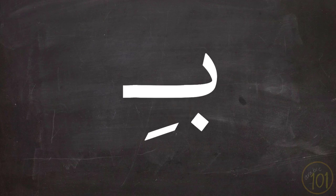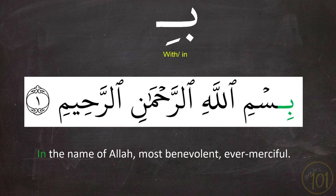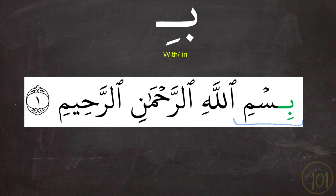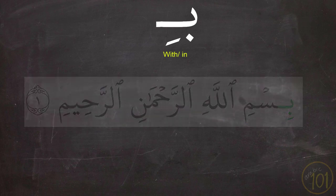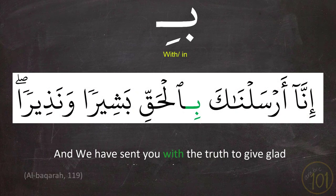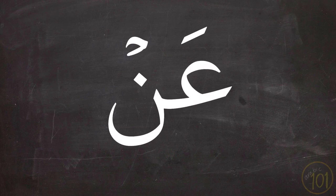The first preposition is بِ and it means 'with' or 'in' — these are the most common translations in the Holy Qur'an. Like in these examples: بِسْمِ اللَّهِ الرَّحْمَانِ الرَّحِيمِ. As mentioned in a previous lesson, بِسْمِ is originally two words: بِ (the preposition) and إِسْمِ, but the hamzat wasl is dropped. If you want to learn more about hamzat wasl and hamzat qat'a and why it is dropped, check that video — you'll find the link in the description. Next example: إِنَّا أَرْسَلْنَاكَ بِالْحَقِّ بَشِيرًا وَنَذِيرًا.